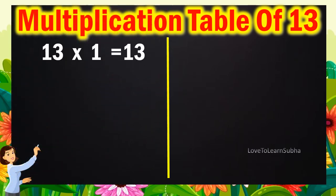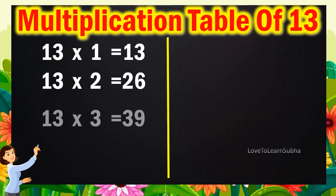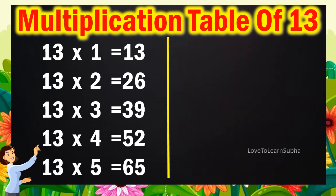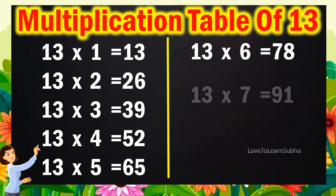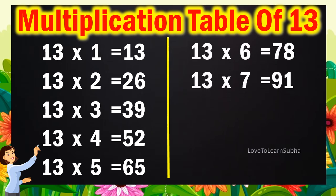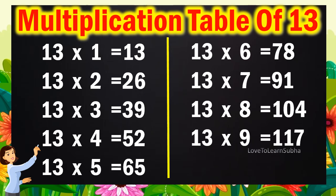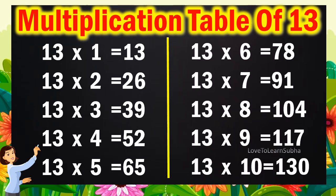13 ones are 13, 13 twos are 26, 13 threes are 39, 13 fours are 52, 13 fives are 65, 13 sixes are 78, 13 sevens are 91, 13 eights are 104, 13 nines are 170, 13 tens are 130.